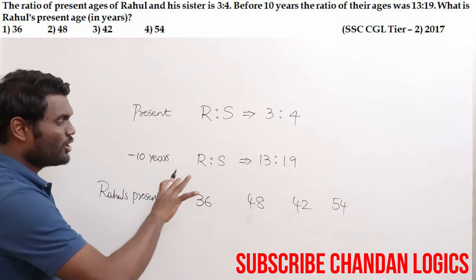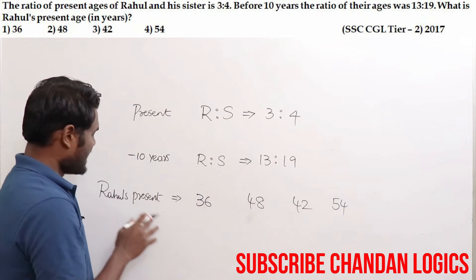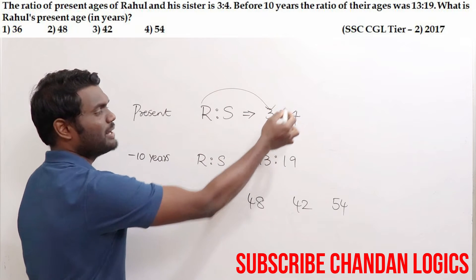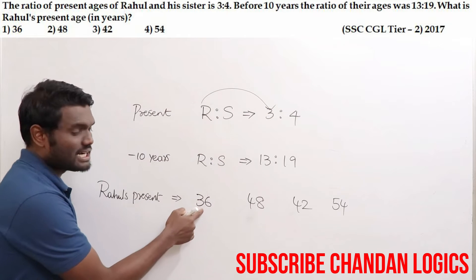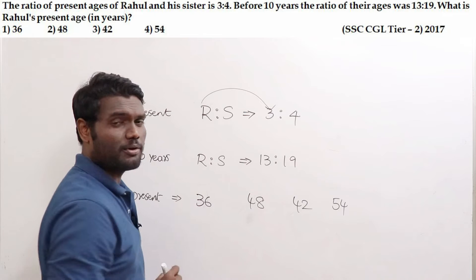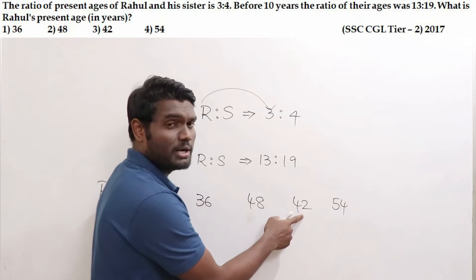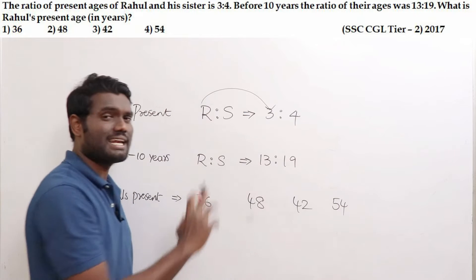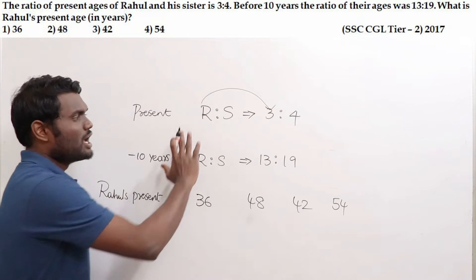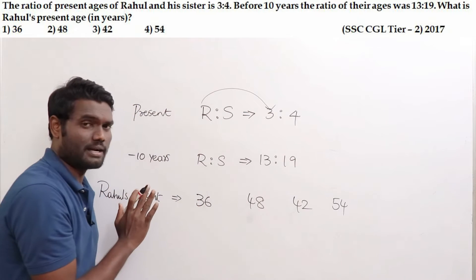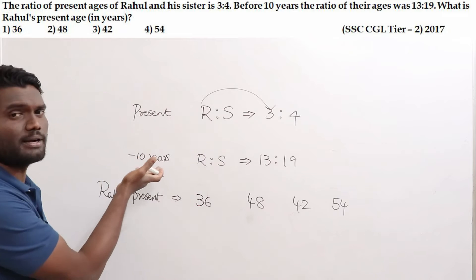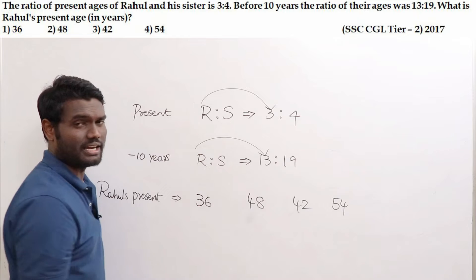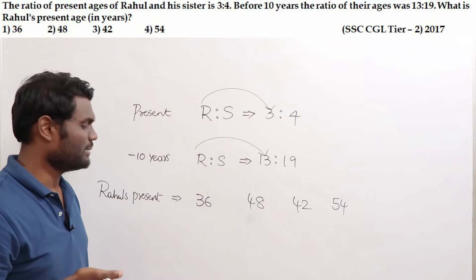How to mark this by just looking at the options? Rahul's present age should be a multiple of 3. Is 36 a multiple of 3? Yes. Is 48? Yes. Is 42? Yes. Is 54? Yes — all options are multiples of 3, so no option is eliminated by the first statement. Now verify the second statement: 10 years back, Rahul's age should be a multiple of 13.